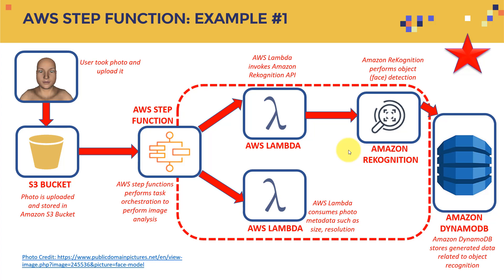Let's look at more examples of systems integration, which is what the exam will test you on. Here the Step Function logo represents orchestration. A user might take a photo, upload it to an Amazon S3 bucket, and then AWS Step Functions perform task orchestration for image analysis. You can run an AWS Lambda function that invokes the Amazon Rekognition service.